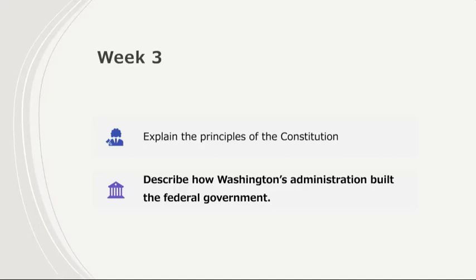Washington's administration also saw the establishment of key federal institutions, including the creation of the first federal bank and the implementation of a national economic plan by Alexander Hamilton. These steps laid the foundation for a stronger, more centralized federal government and set the United States on the path to becoming a stable and prosperous nation. We will discuss all of these sections in more detail during class this week. Thank you.